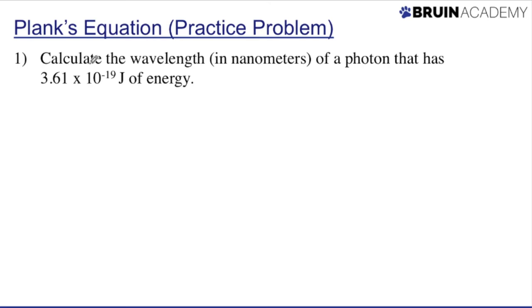All right, so the question says, calculate the wavelength in nanometers of a photon that has 3.61 times 10 to the negative 19 joules of energy. All right? So to do that, we're going to use Planck's equation, and we're going to use the form that has a lambda in it, because we're looking for a wavelength. So we're going to use E equals hc over lambda.